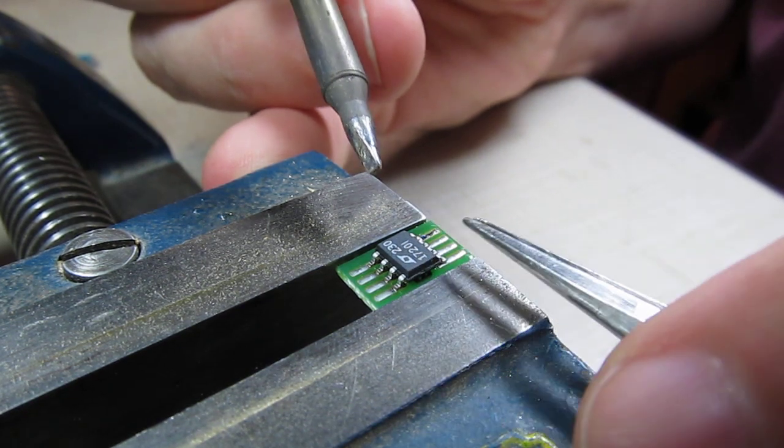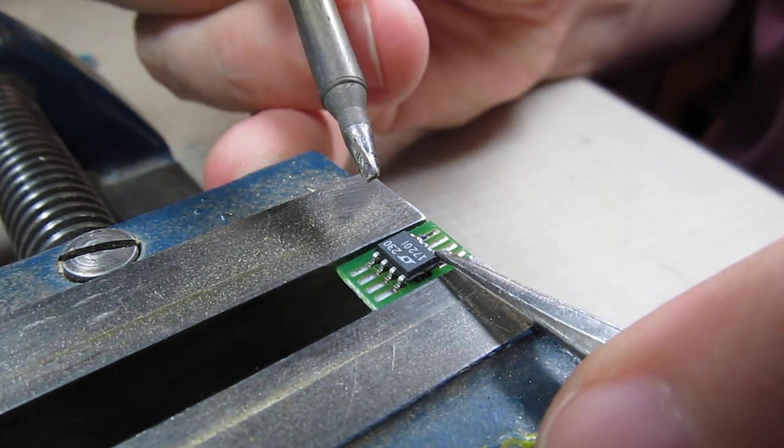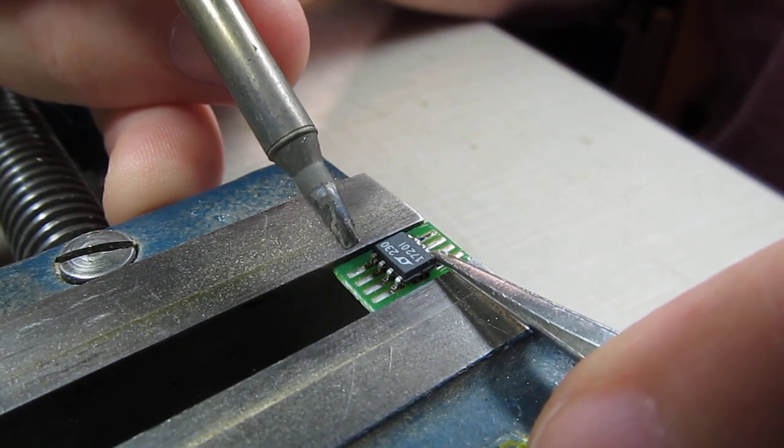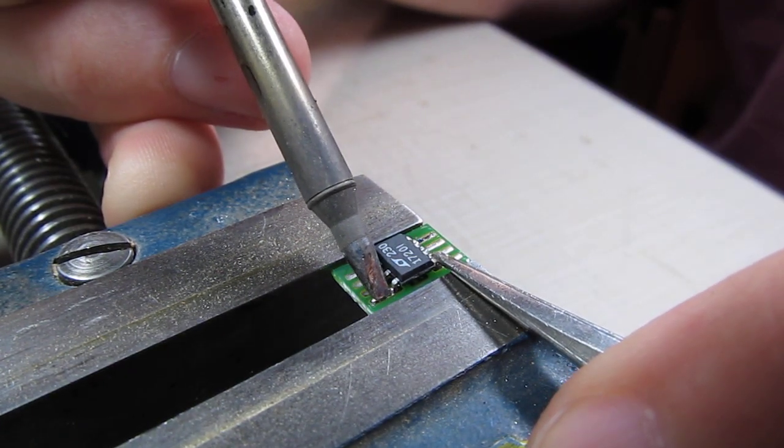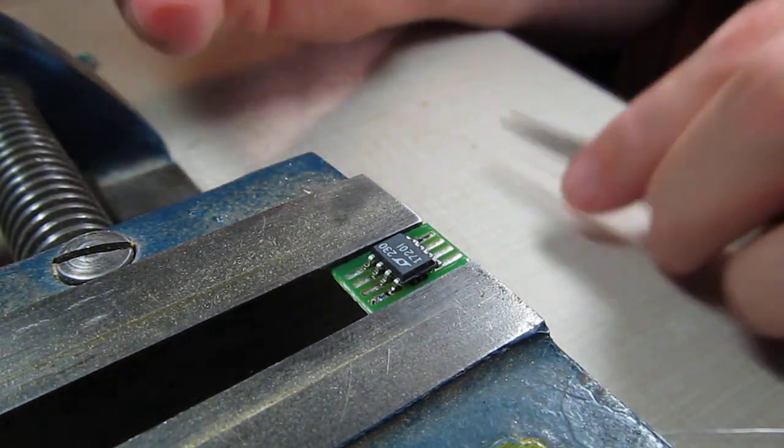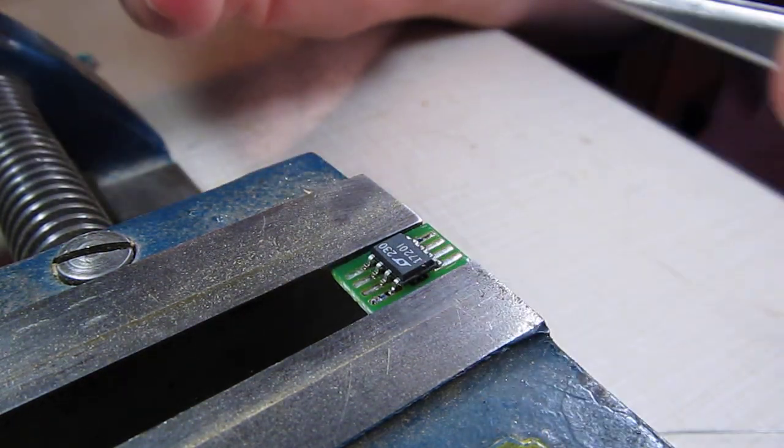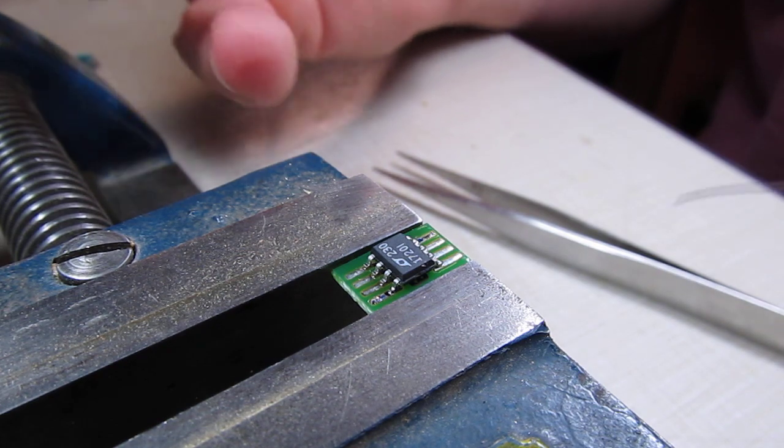That's enough usually just to tack it so that now it doesn't really want to move. Then if I need to I'll tweak it around a little bit and tack the opposite corner the same way. So now with two corners tacked in place the part is really stuck, it's not going to move.